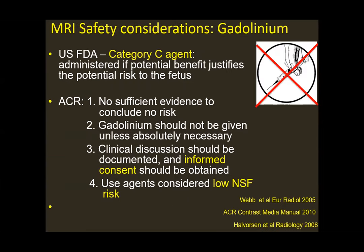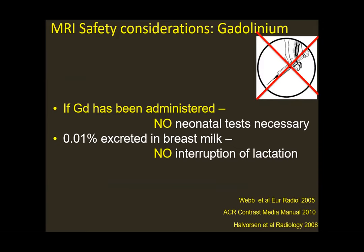As of now, gadolinium is considered a Category C agent, meaning it should not be administered unless the potential benefit justifies the potential risk to the fetus. There must be a clinical discussion that is documented, and informed consent must be obtained. If gadolinium is used, agents considered low NSF risk should be selected. After administration, there is no need for neonatal tests and no need to interrupt lactation, as the concentration in breast milk is meniscal.